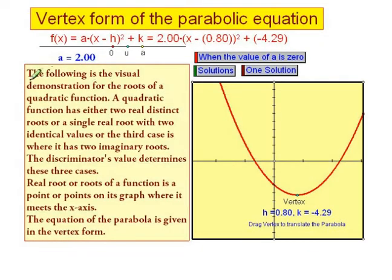The following is the visual demonstration for the roots of a quadratic function. A quadratic function has either two real distinct roots or a single real root with two identical values, or the third case is where it has two imaginary roots. The discriminant's value determines these three cases.